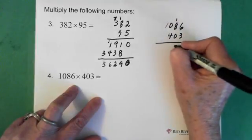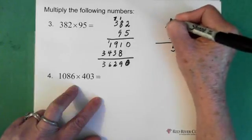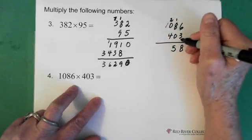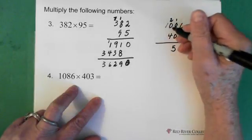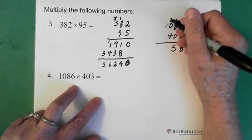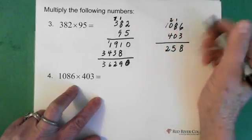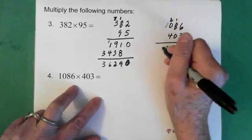3 times 8 is 24. Add the 1, we have 25. So 5 and we carry the 2. 3 times 0 is 0. And we add the 2 and we end up with a 2. 3 times 1 is 3.